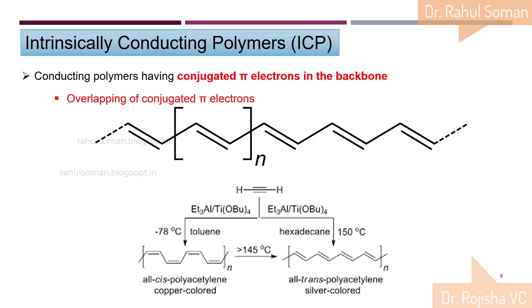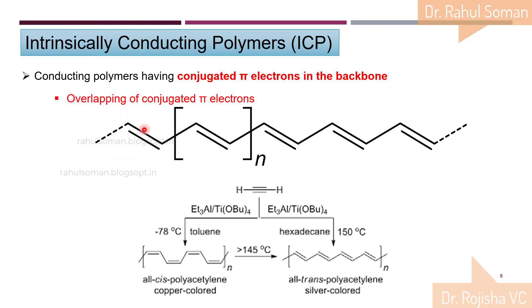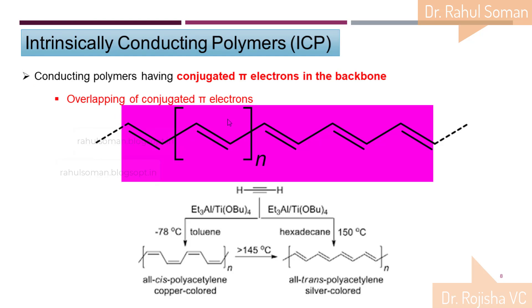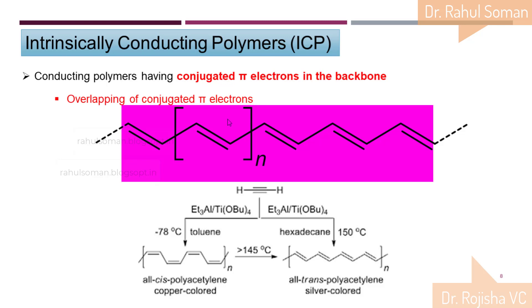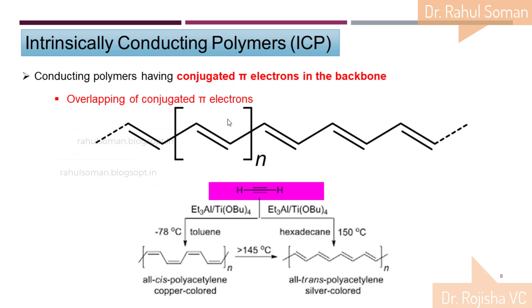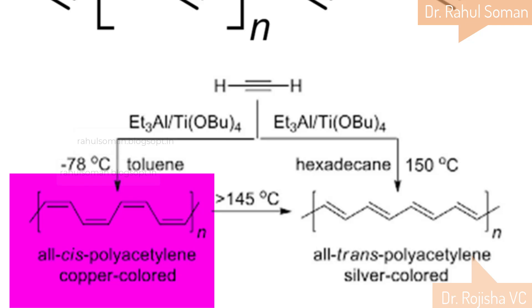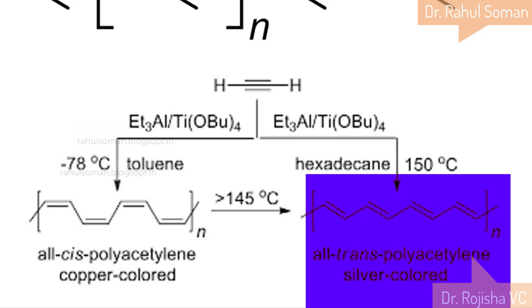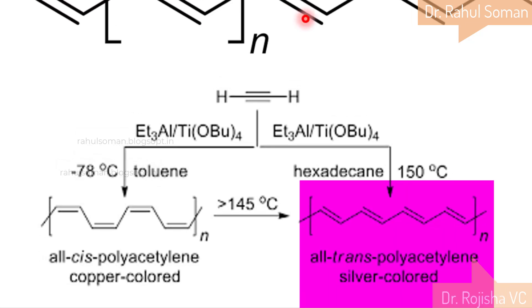Intrinsically conducting polymers have conductance as an inherent property, arising from alternating double and single bonds in the backbone. Polyacetylene — the polymer formed by polymerization of acetylene — has a backbone of alternating double and single bonds. It can be synthesized in either the cis form or the trans form. In general, the trans form shows better conductance than the cis form.